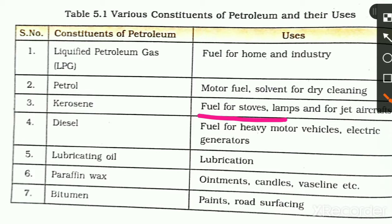The fourth product is diesel. Diesel is used as a fuel for heavy motor vehicles, and it is also used as a fuel for electric generators.